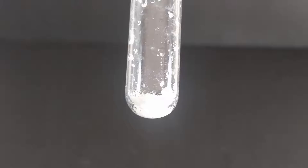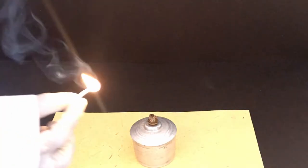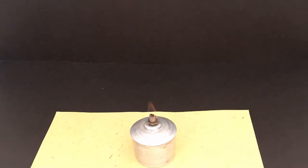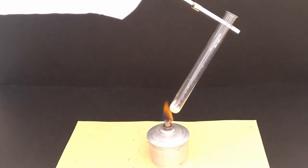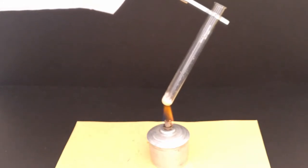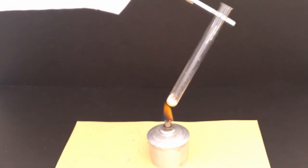Take about half a spatula of lead nitrate in a test tube as shown. Light the spirit lamp and hold the test tube over the flame using a test tube holder. Make sure the mouth of the test tube is pointing away from you.